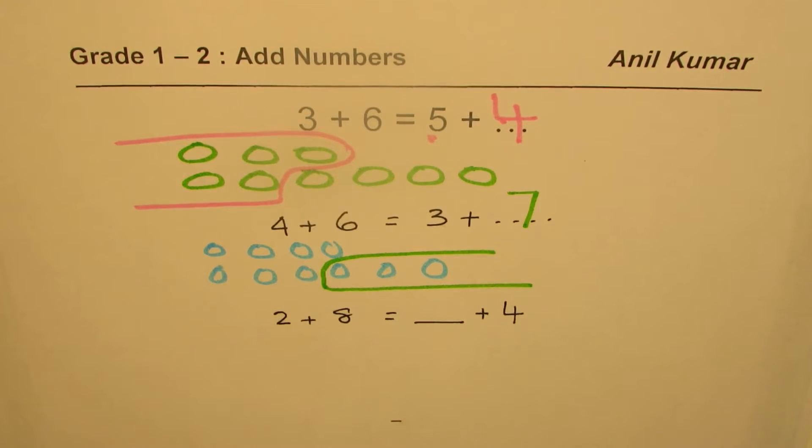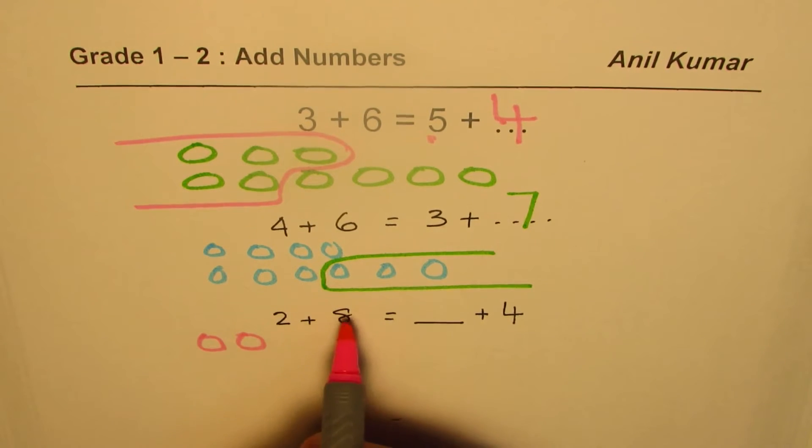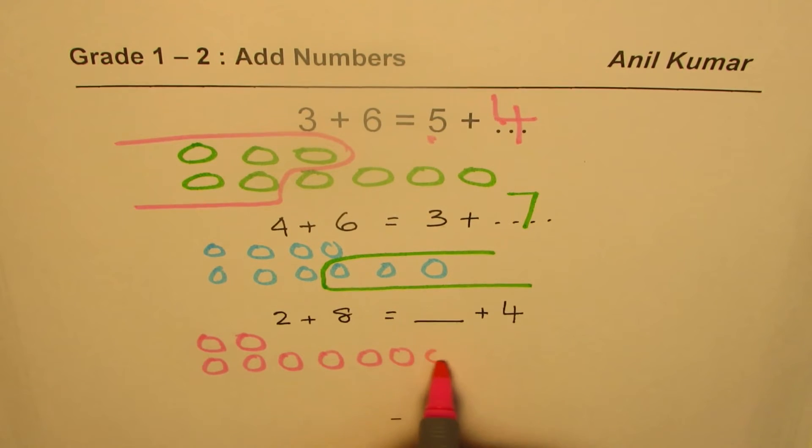You can actually pause the video, answer this question, and then check your answer. So let's draw these circles. This time I'll use pink color to draw 2 + 8. So this is two circles and then eight: one, two, three, four, five, six, seven, eight.